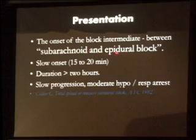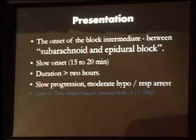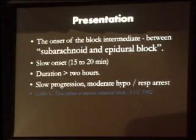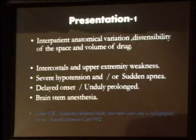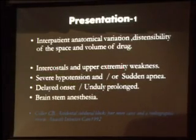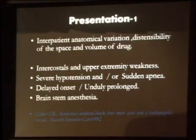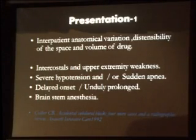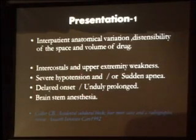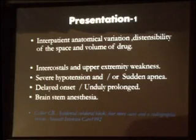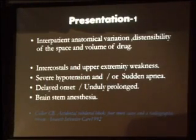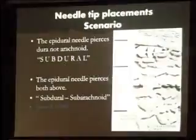The onset of subdural block is between subarachnoid and epidural — slow onset of 15 to 20 minutes, duration more than 2 hours, with slow progression, moderate hypotension, and respiratory arrest. You can also see combinations such as intercostal and upper extremity weakness, severe hypotension, or sudden apnea. Onset can be delayed and the block unduly prolonged — a block lasting around 9 hours has been reported. It can produce brainstem anesthesia because the subdural space extends along the brain.